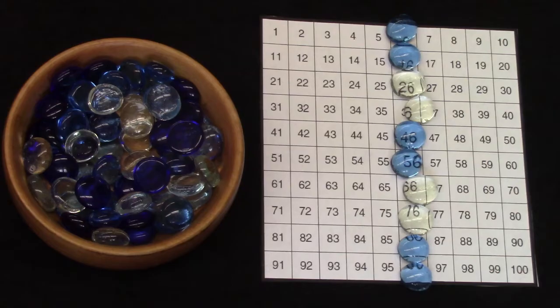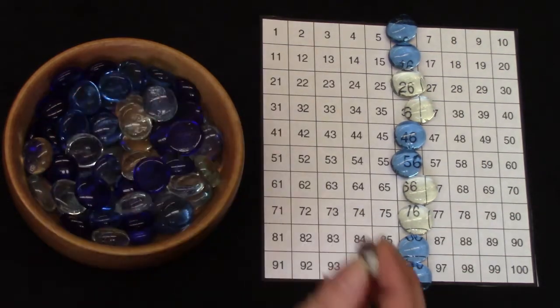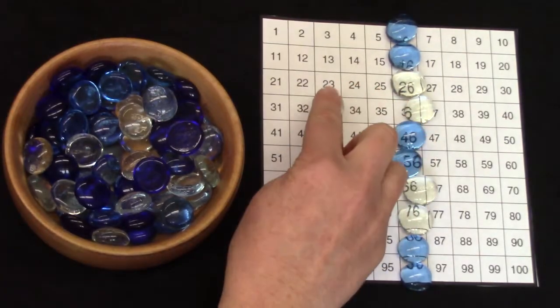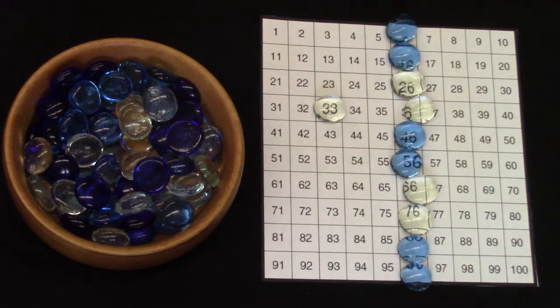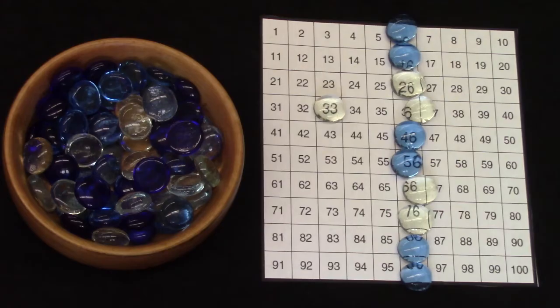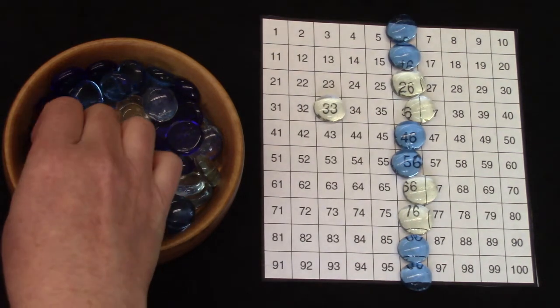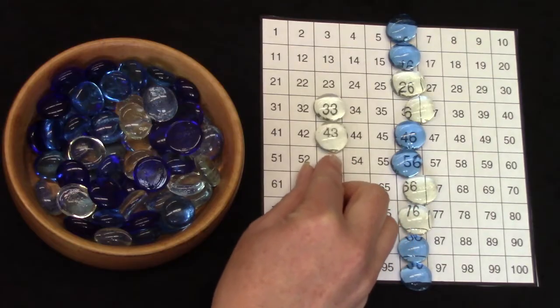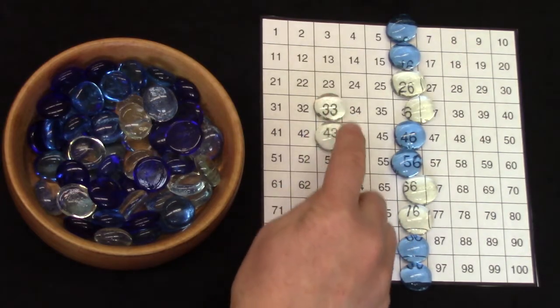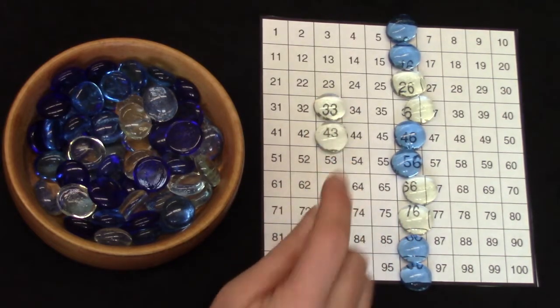Hmm. What if I chose another number? What if I chose the number 33? What would be 10 more than 33? Do you know it without counting? You're right. It is 43. 33 plus 10 is 43.